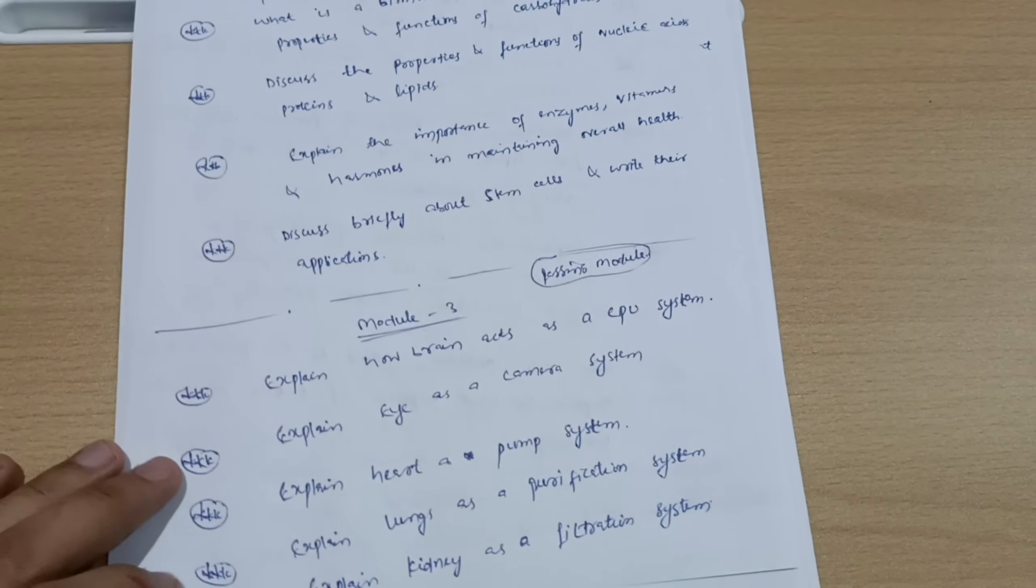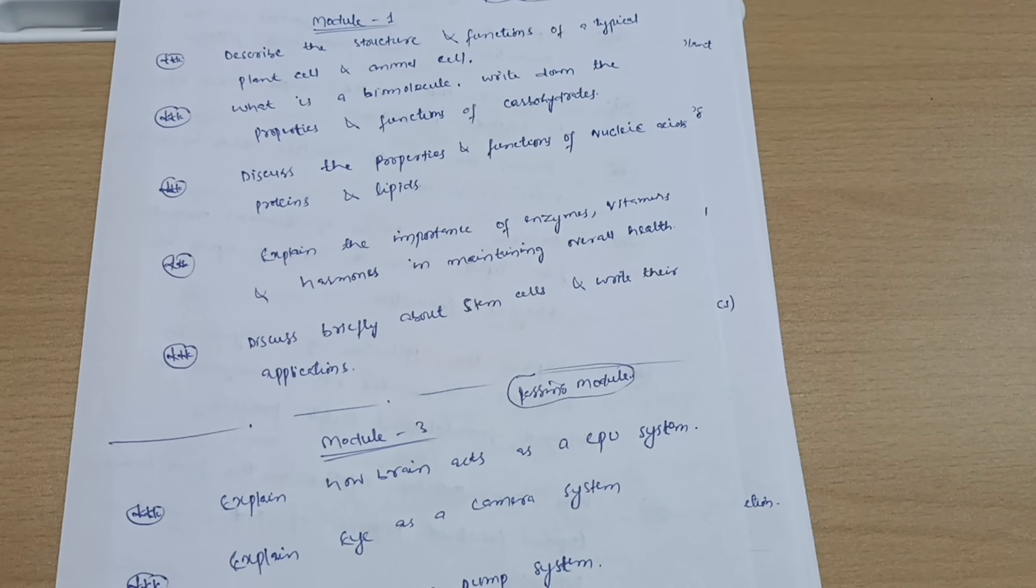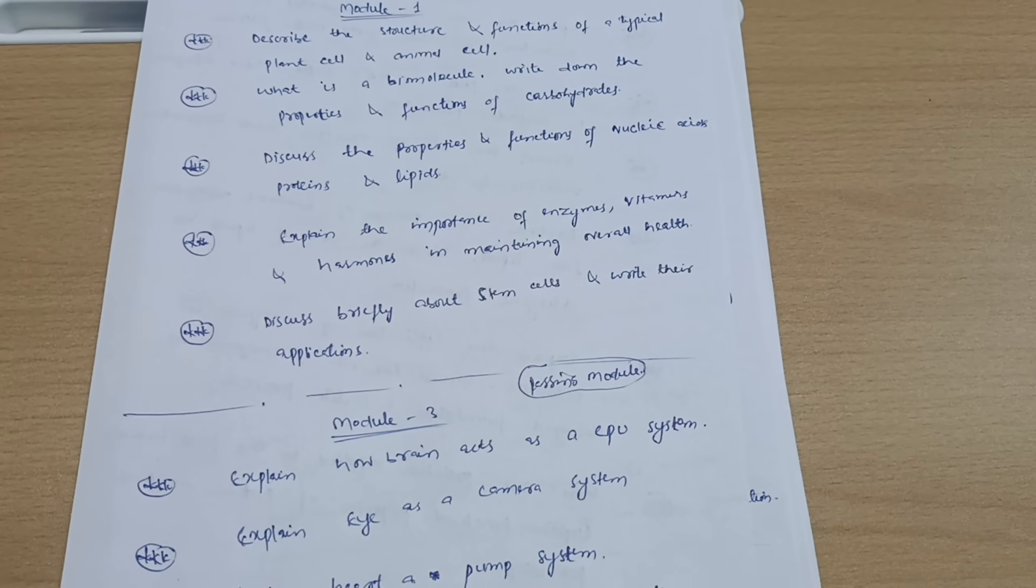Explain lungs as a purification system and explain kidney as a filtration system. Try to understand these concepts in your own convenient language, and in the examination fill your answer booklet with your own words. It is not necessary to write down point-to-point whatever is mentioned in your notes. If you just grab the concepts, you can easily write those concepts in your own words.